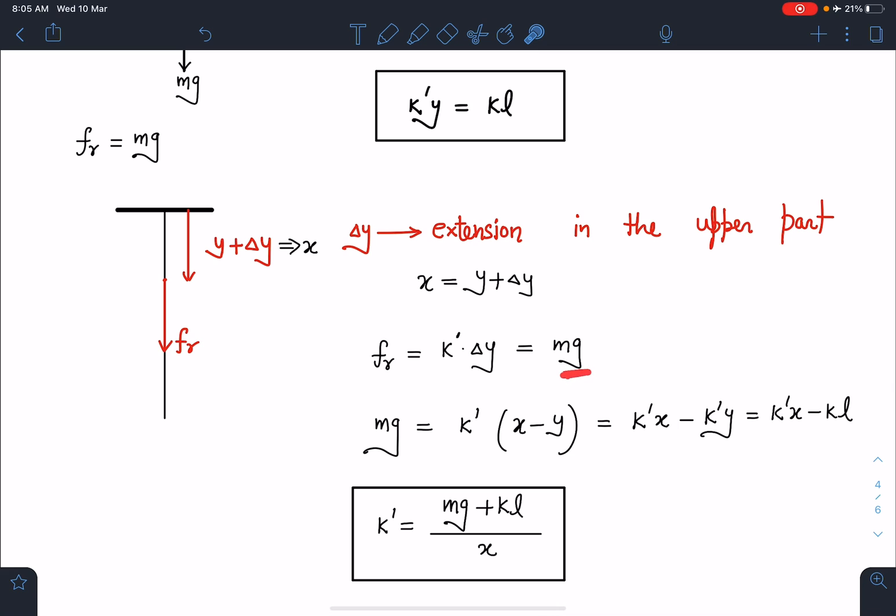Now this mg is going to be equal to delta y which is x minus y, so this expression becomes k dash x minus k dash y. If you see this carefully, k dash y is nothing but kl, so k dash x minus kl equals mg. From here I get the value of k dash which is (mg plus kl) divided by x, because we are going to use this while writing energy.